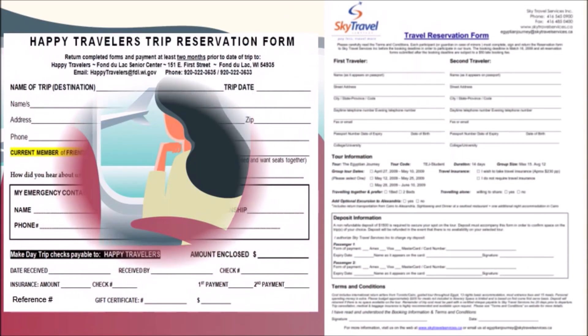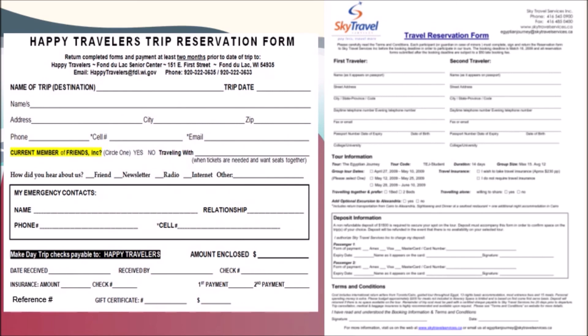This is an example of a reservation form. You may include details stated here to create a marketable booking card in your activity later. The parts of the travel form to accomplish include: the date, reference number, name, home address or phone number or email address, company name, address and contact person if any, flight itinerary, hotel accommodations, and sightseeing tours.